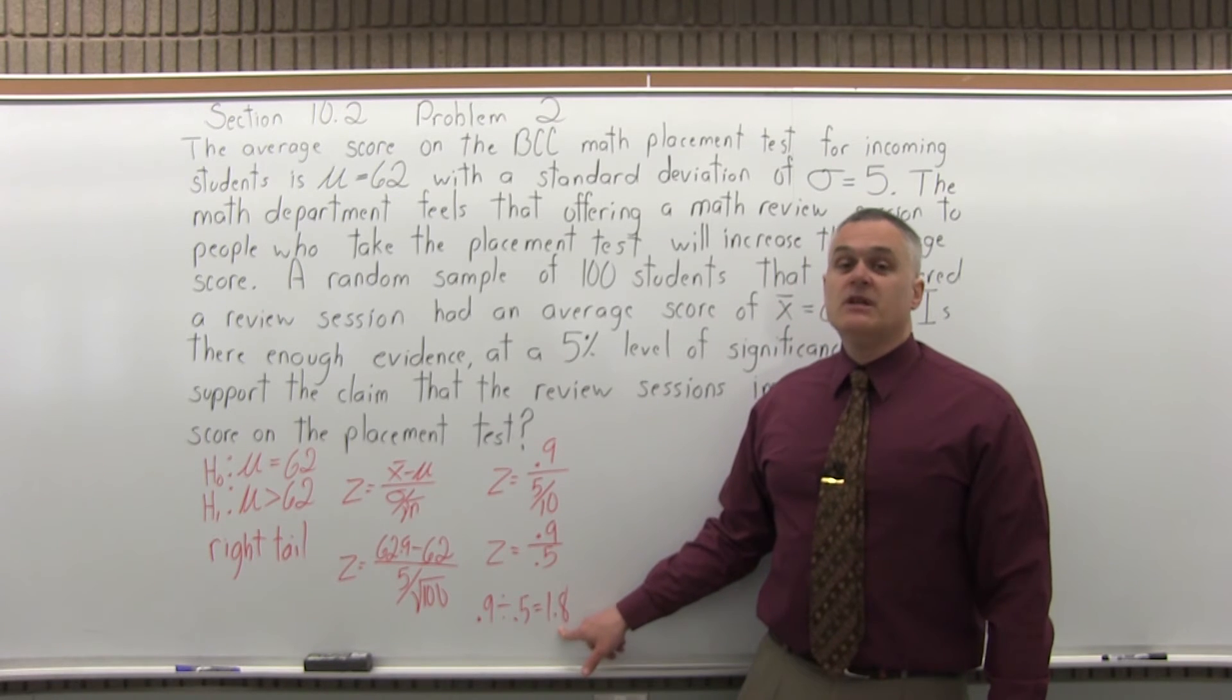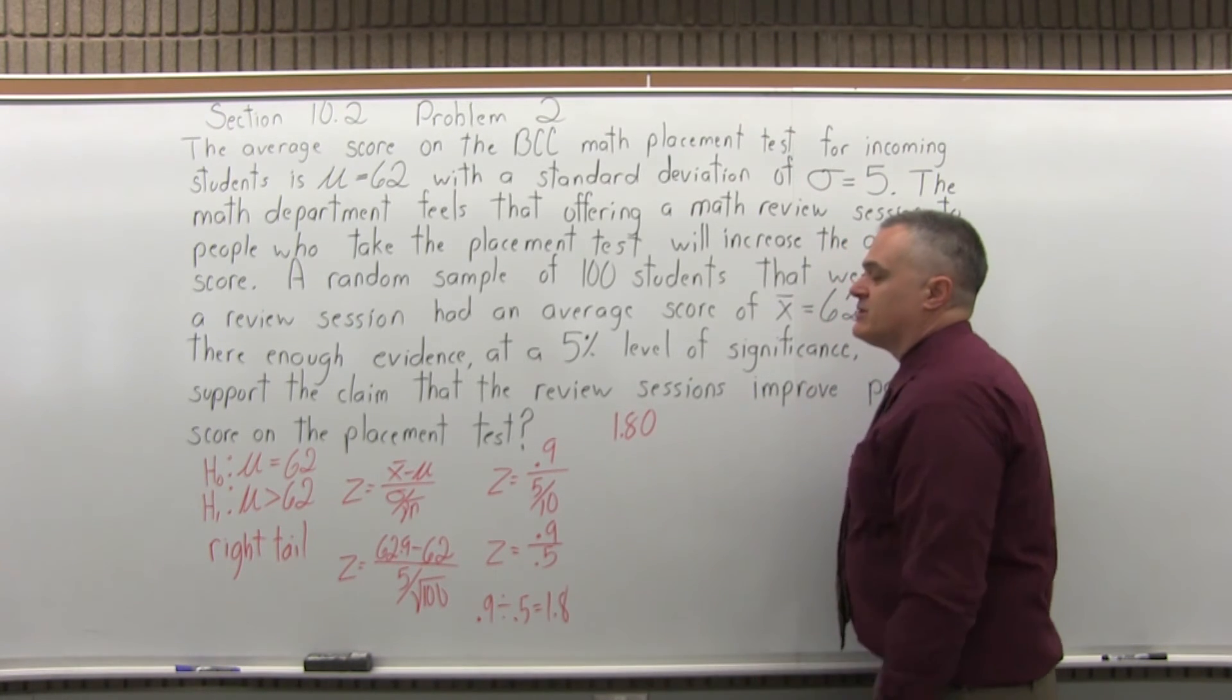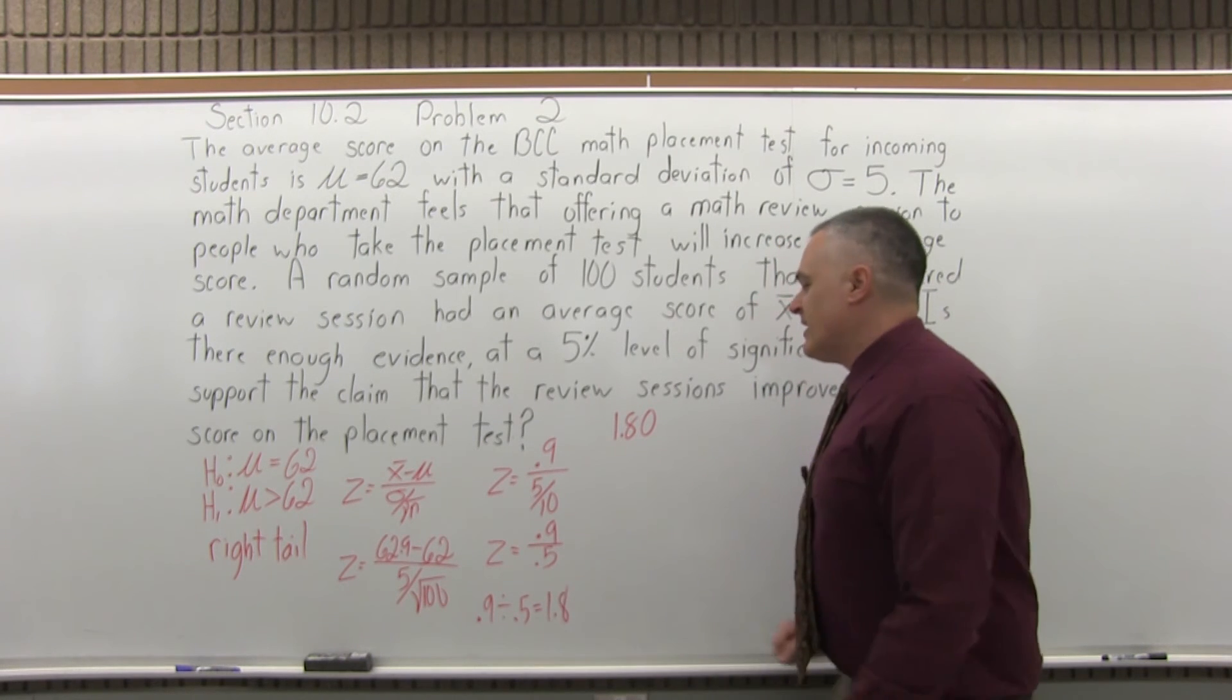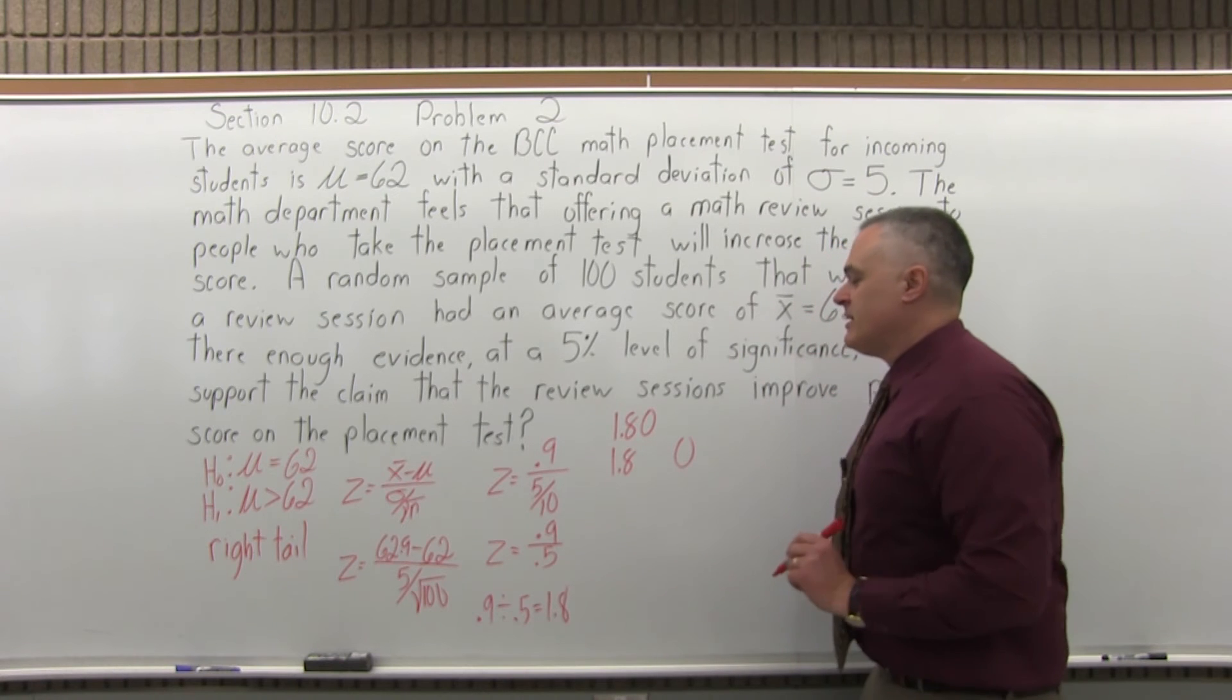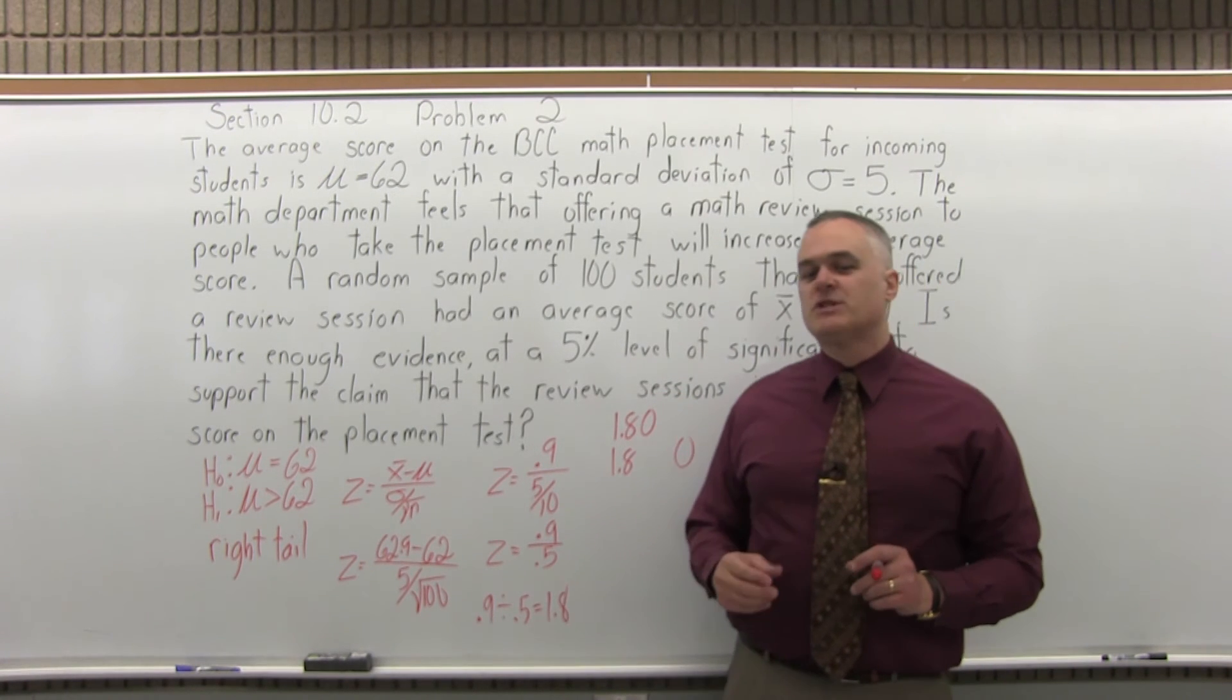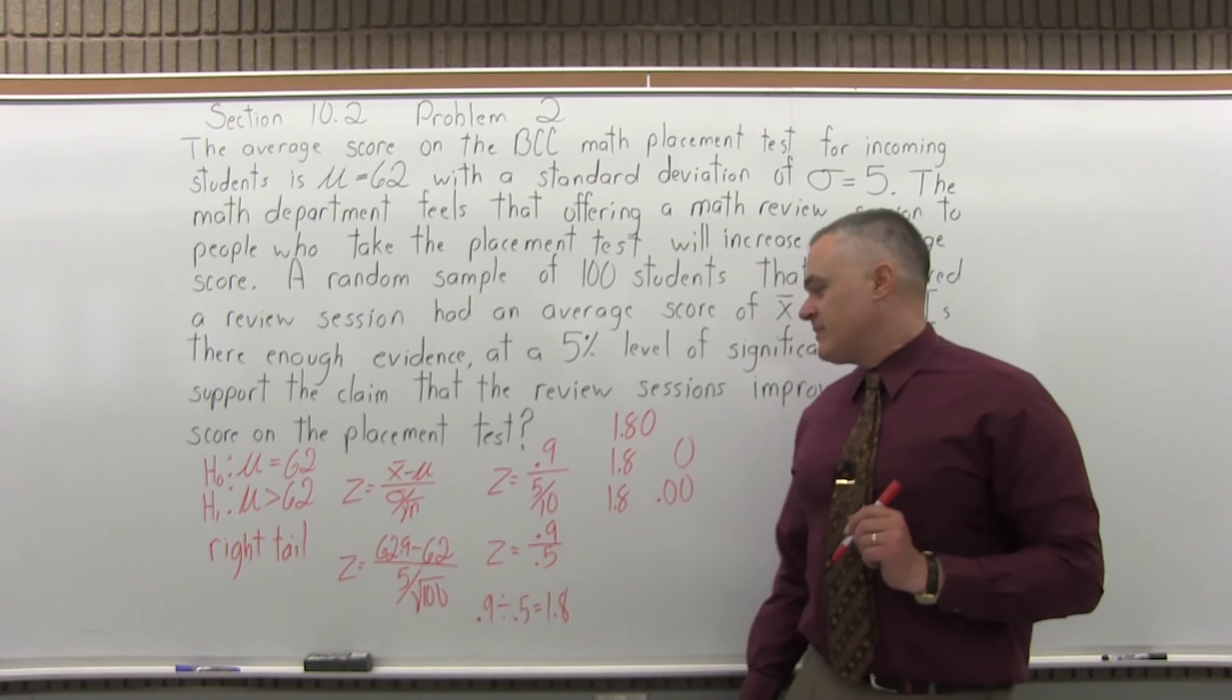So step 5 is look up the value for z in the standard normal chart, the z chart. So to look up something in that chart, first you want to write it so that it has two places after the decimal. So that 1.8 must be written as 1.80. Now I have two places. The next part of that process to look something up in the standard normal chart is split the number to look up into two parts by pulling off the rightmost digit. So that rightmost digit of 0 gets pulled off to the side. Now I have the number split into two separate parts. Then after that I put a 0.0 in front of the rightmost digit that I pulled off. So I have 1.8 and 0.00.